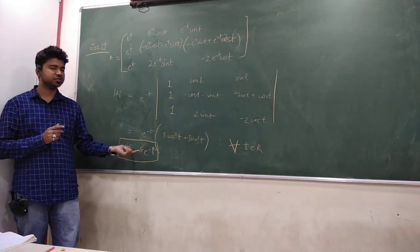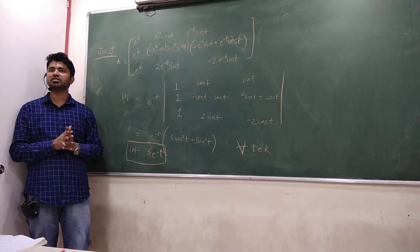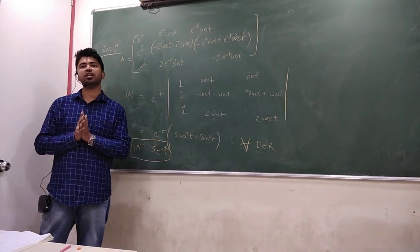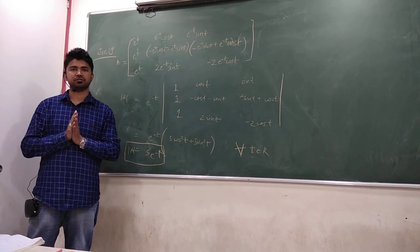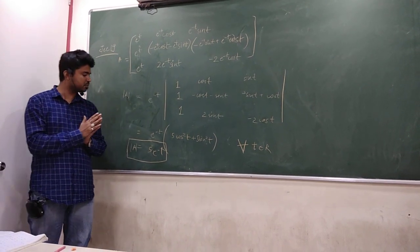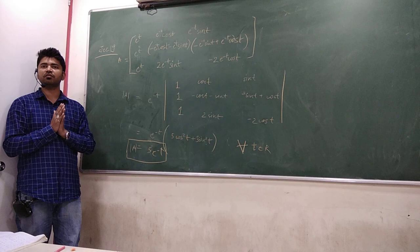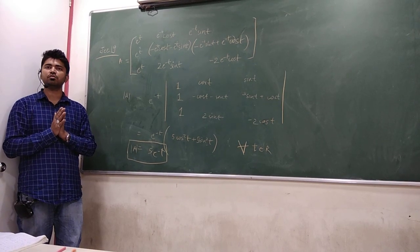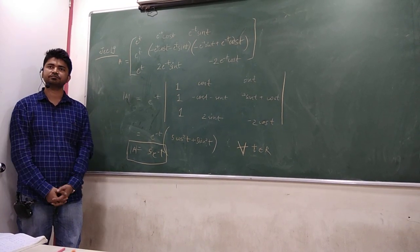So, that means, ye question, ye jo, hamare paas matrix hai, ye hamesha hi invertible hoga, aap t ki value kuch bhi put karo. So, the right answer will be, this matrix will be invertible for all t belongs to R. Alright? Thank you, students.